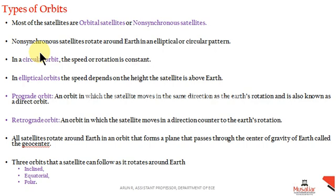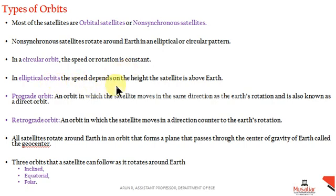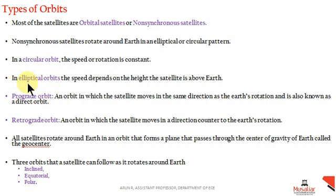In a circular orbit, the speed of rotation is constant. For an elliptical orbit, the speed may vary — in the aphelion region and perihelion region, the speed or velocity may vary. In elliptical orbits, the speed depends on the height the satellite is above the earth.